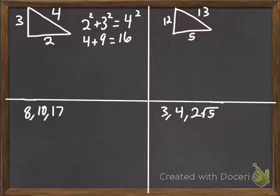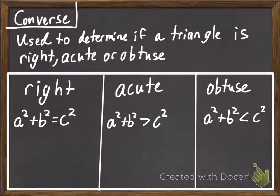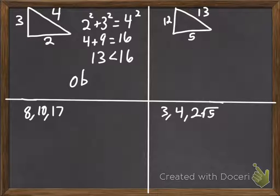4 plus 9 is 13, and 16. So, 16 is greater than 13. So, 13 is less than 16. If it's less than, if we look back here, that means that it is obtuse. So, we have an obtuse triangle here.